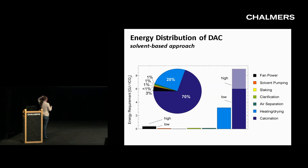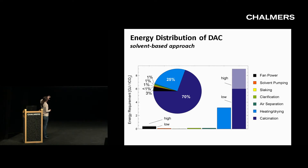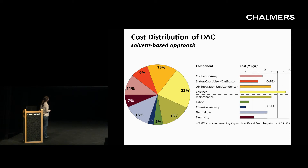The solvent-based approach used at Carbon Engineering — potassium hydroxide — has its biggest energy cost in regeneration: heating calcium carbonate to 900 degrees C in a calciner, plus heating and drying. That accounts for 95% of the energy, while the fan and solvent pumping are a very small percent. In the cost breakdown, natural gas is a significant component at 13%. The oxy-fired calciners — not yet commercially available — are also a very expensive unit, contributing significantly to cost.